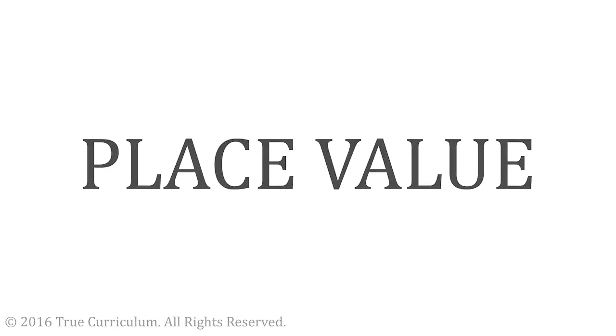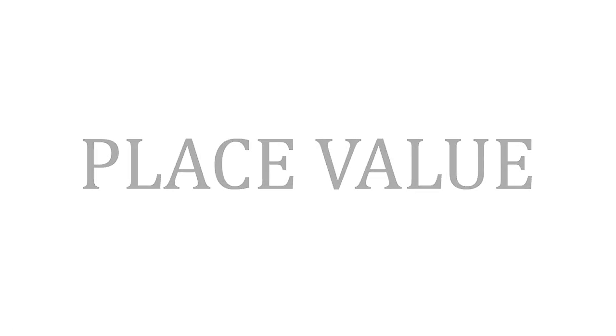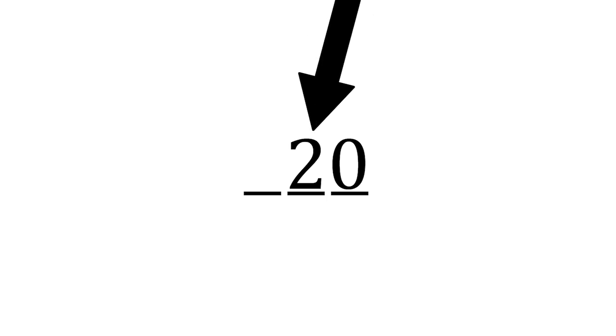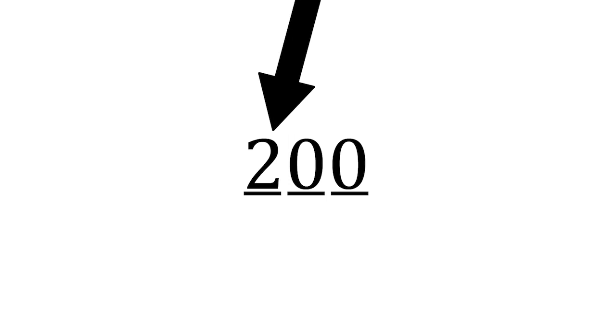The same numeral can be used to write different amounts. When you see a 2 here, it means 2. When you see a 2 here, it means 20. When you see a 2 here, it means 200.